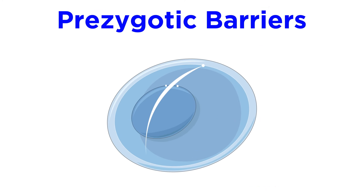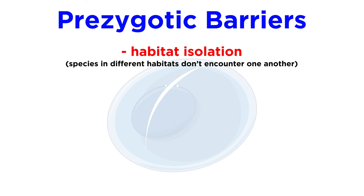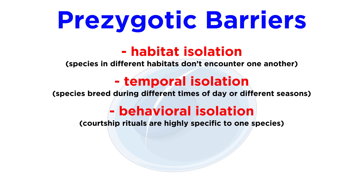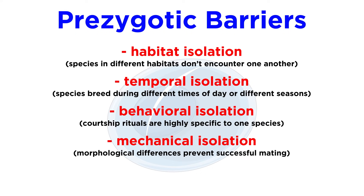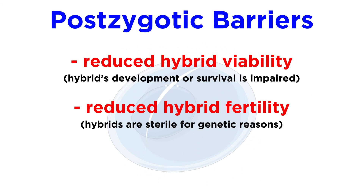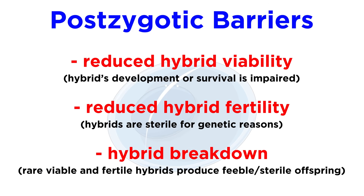Prezygotic barriers include habitat isolation, temporal isolation, behavioral isolation, mechanical isolation, and gametic isolation. Postzygotic barriers include reduced hybrid viability or fertility, and hybrid breakdown.